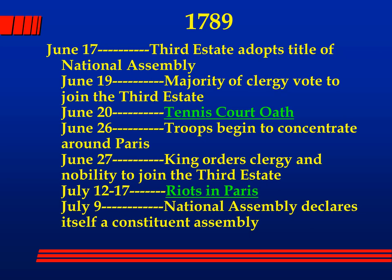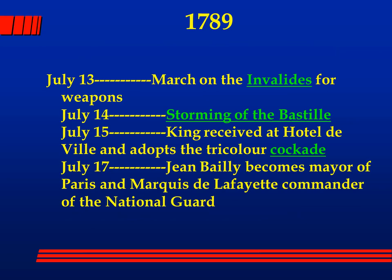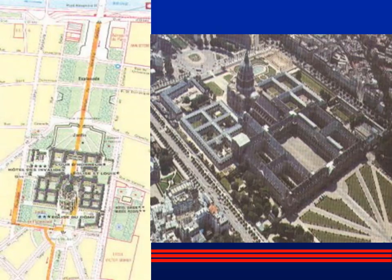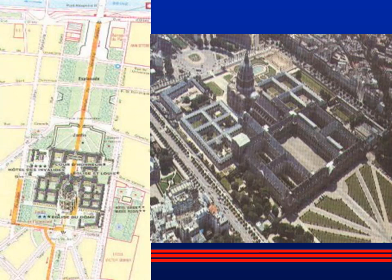On July the 12th, rioting began in Paris as people looked for weapons to defend the National Assembly against the Swiss Guard. They went to various locations, including the Invalides — an aerial view shown here. It was a hospital built by Louis XIV to house wounded soldiers, and also an armory. A crowd of almost 60,000 gathered in its parade grounds, confronted Governor General Saint-Barrel, and said they wanted weapons.